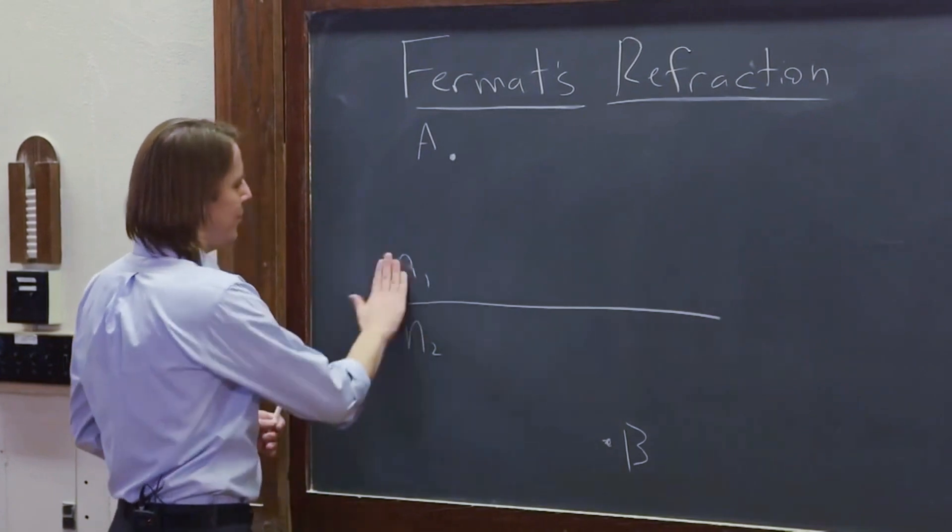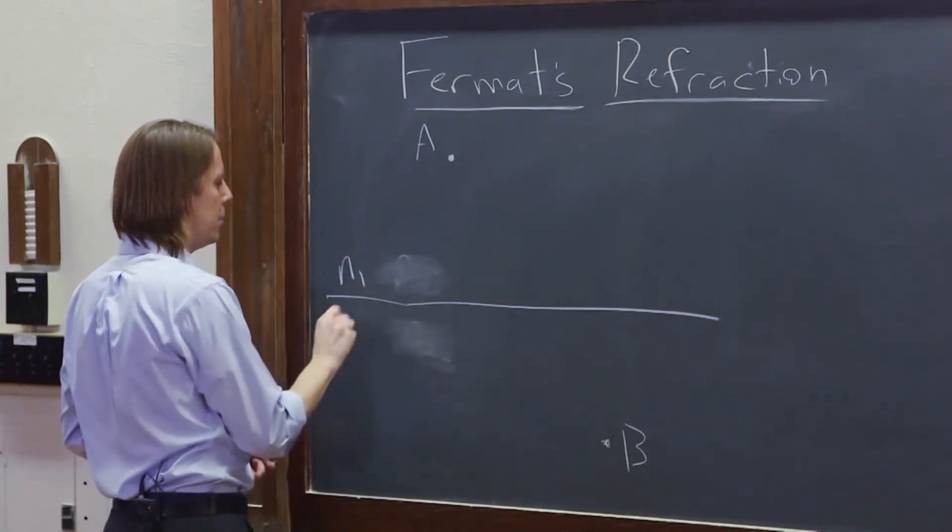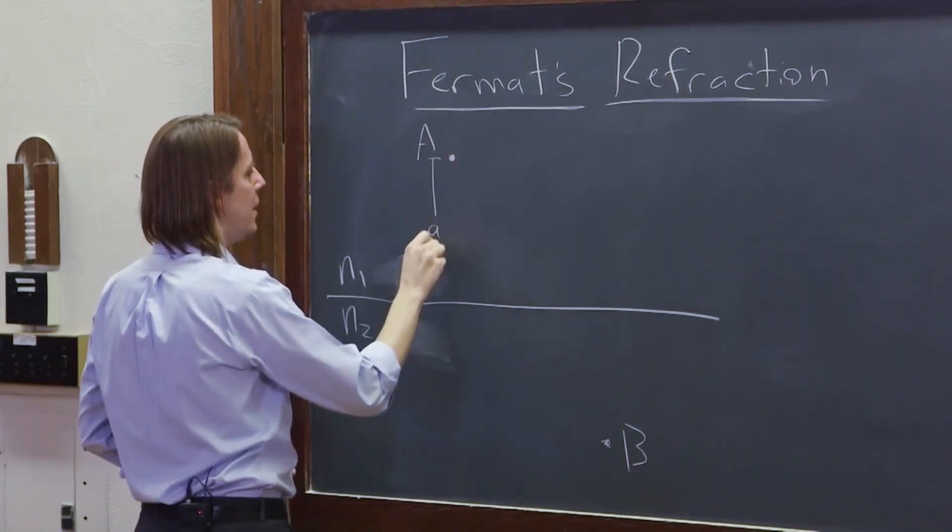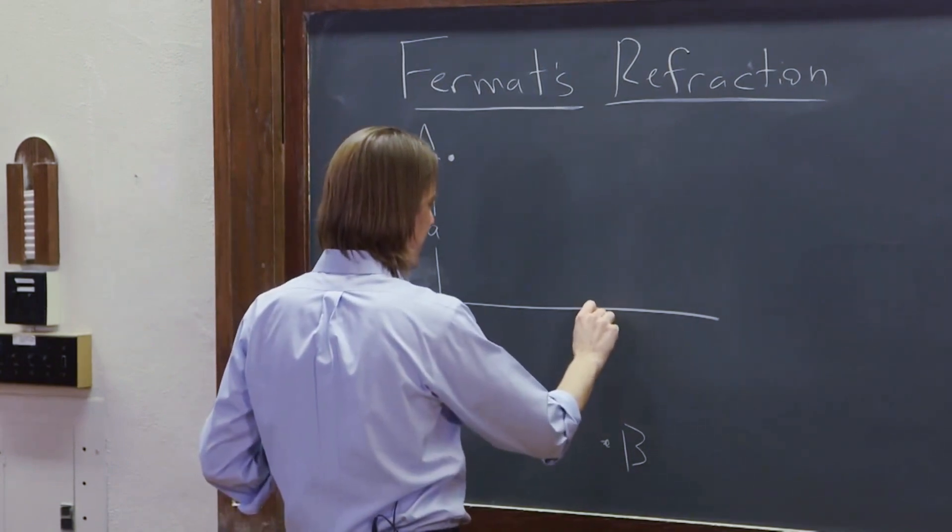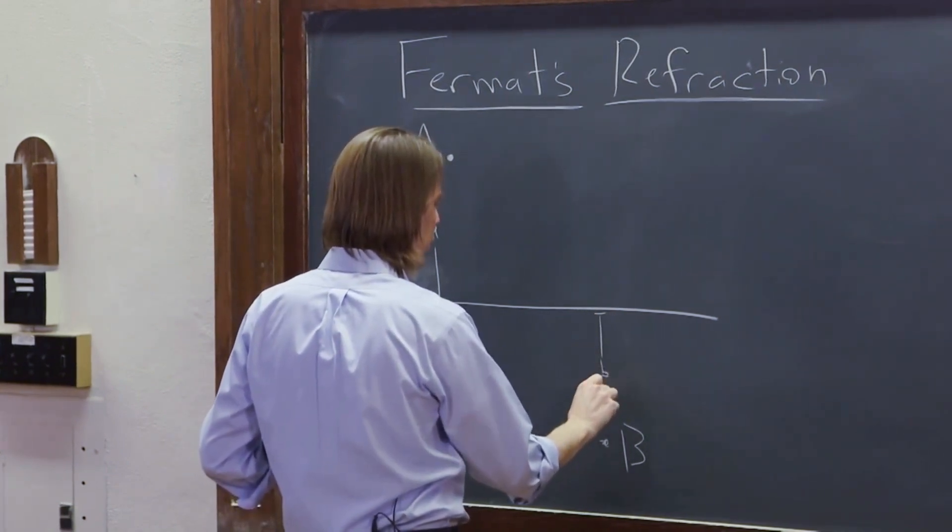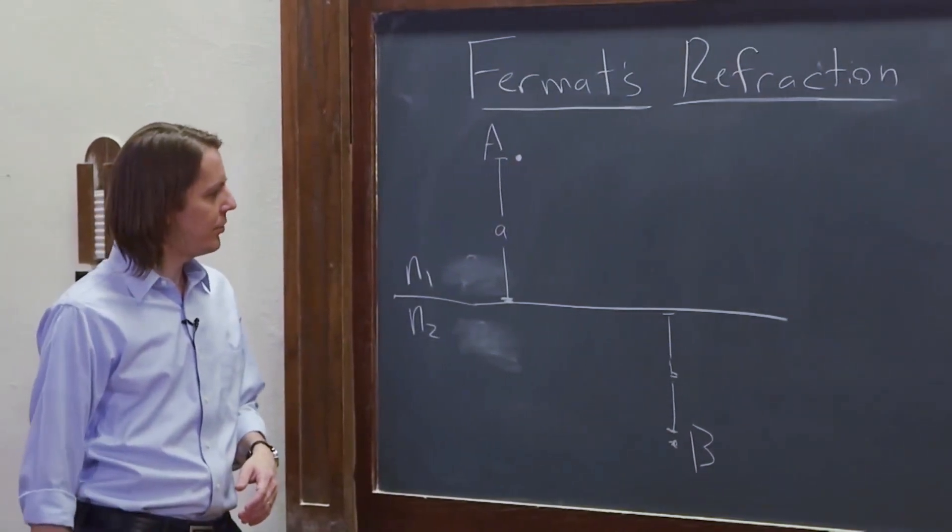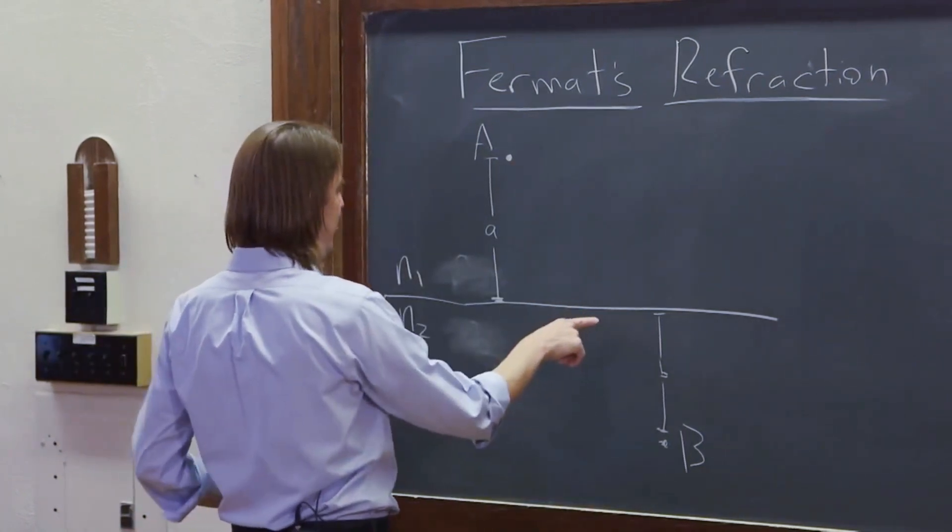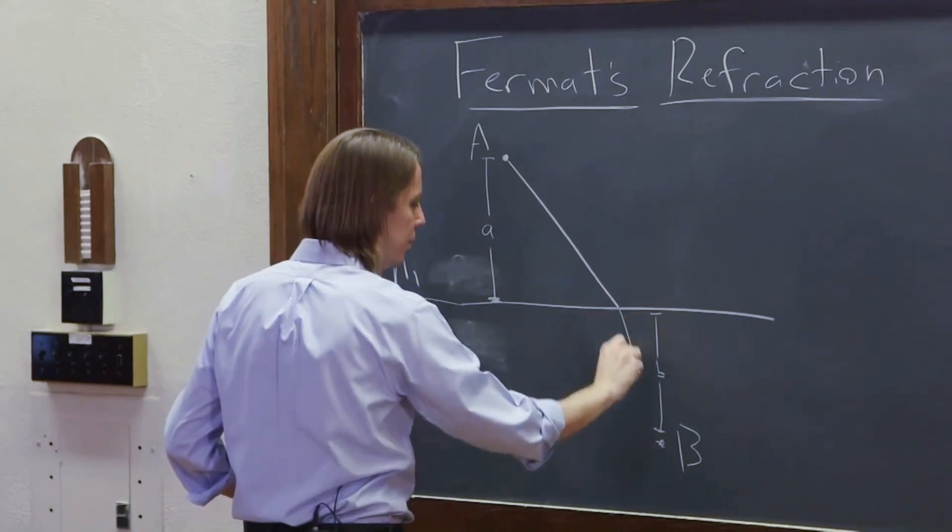And we're going to set this up similar to last time. Let me get these out of the way. Put these way over here. Because we're going to say this is at a height A above the surface, and this is at a subterranean height B below the surface. And we don't know where the light's going to go.